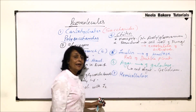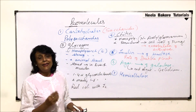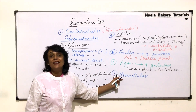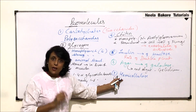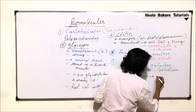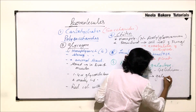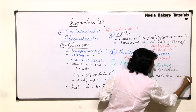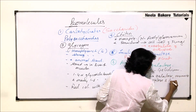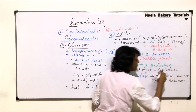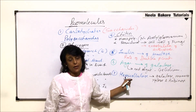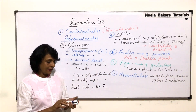Hemicellulose is a heteropolysaccharide. It is a matrix-like substance in which the cellulose fibers are arranged in the cell wall. It is made up of four different units: galactose, mannose, xylulose, and arabinose.